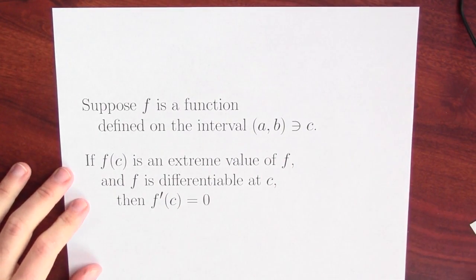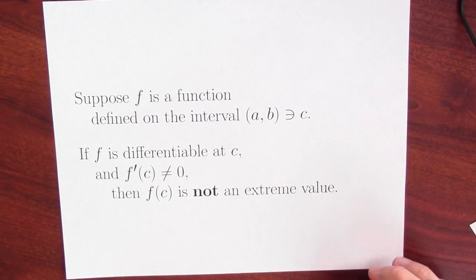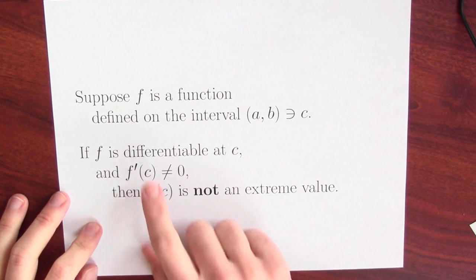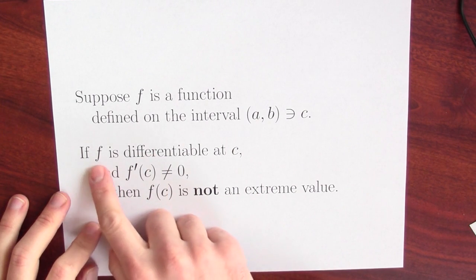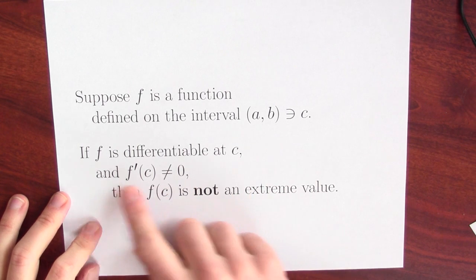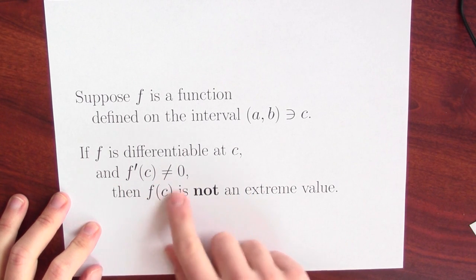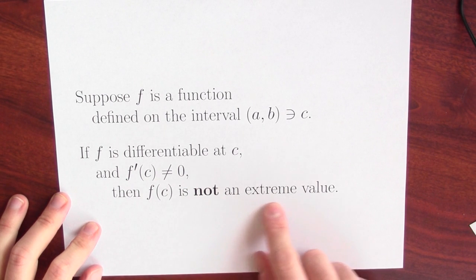It's actually easier to show something slightly different. So instead of dealing with this, I'm going to deal with a different statement. Same setup as before, but now I'm going to try to show that if f is differentiable at the point c and the derivative is non-zero, then f of c is not an extreme value.